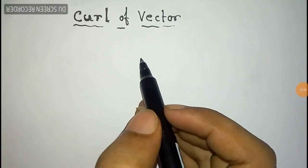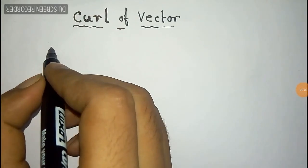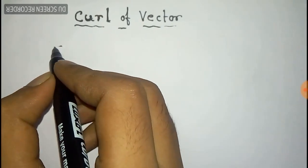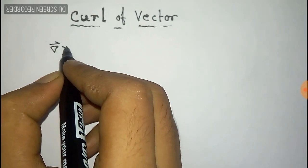We have to calculate the curl of a vector. The curl of a vector is given by nabla cross the vector A.